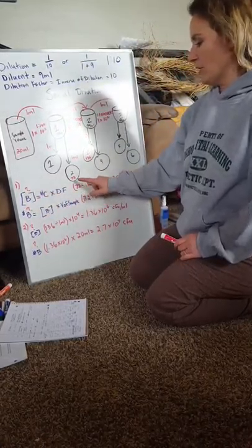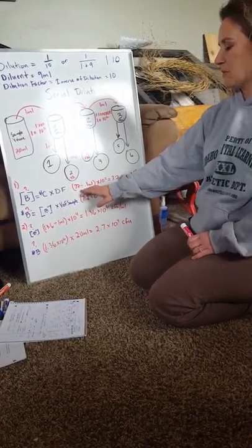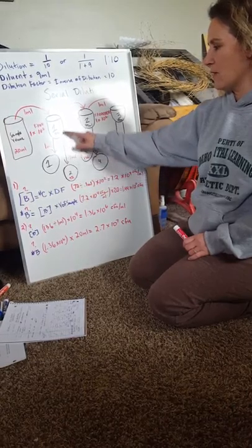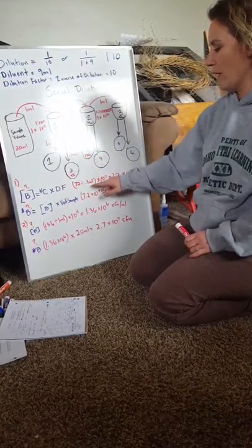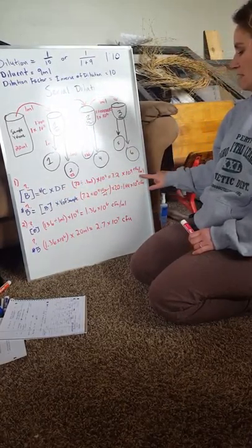So we're going to multiply. According to the book, we should use this equation, but I decided to add one more step to simplify it. We're going to take 72 colonies divided by the amount that we extracted, 0.1 ml, then times it by the dilution factor to get this.